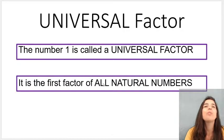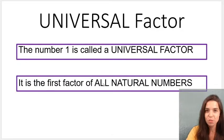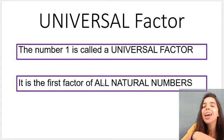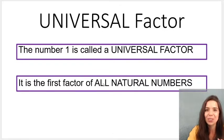The universal factor is number 1. So what that means is number 1 is a factor of all other natural numbers. 1 can go into any other number, it's pretty cool.